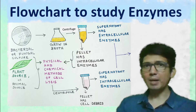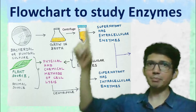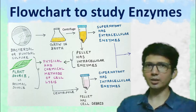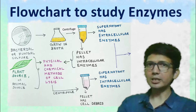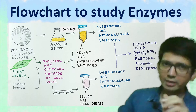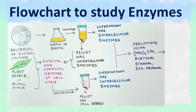So depending on your enzyme, it can be extracellular or intracellular. Once the supernatant is obtained, we need to precipitate the enzyme. For this, we can use ammonium sulphate, or we can use solvents like ethanol, acetone, or isopropyl alcohol. All of these will precipitate the enzyme.